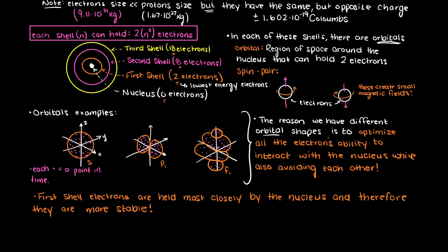In each subsequent shell, our electrons are less and less stable. In the next video, we'll be talking about the ground state electron configurations, which is an excellent way of depicting where our electrons are in a given atom.